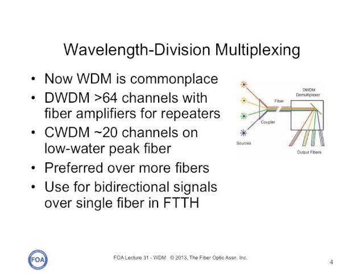It's typical in long distance networks today to use wavelength division multiplexing on very long distance lengths. Here we use dense wavelength division multiplexing with more than 64 channels, tightly spaced, with fiber amplifiers for repeaters. We also can use coarse wavelength division multiplexing with fewer channels, wider spaced, but for those we need low water peak fiber, which allows us to use the entire spectrum of single mode fiber.